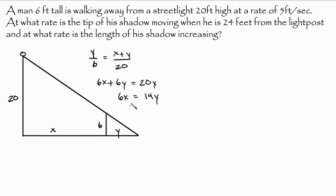I'm going to keep on going here. So I have 6x equal to 14y. Now let's differentiate implicitly with respect to time, because as time goes by, things are increasing. So let's differentiate with respect to time. That's going to be 6 dx/dt is equal to 14 dy/dt.